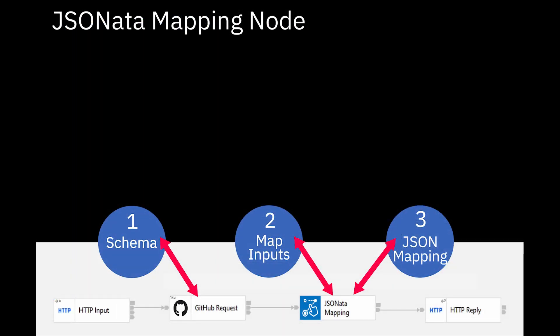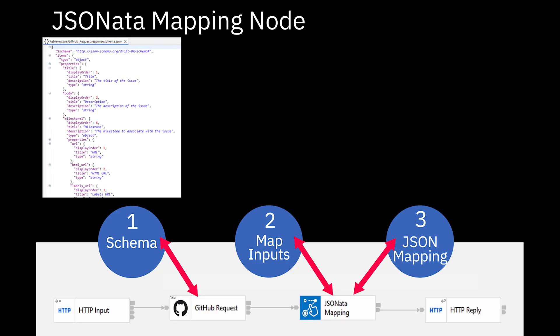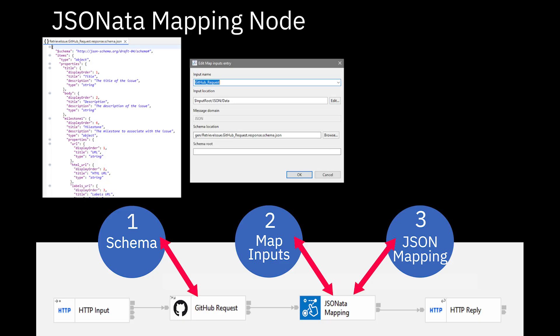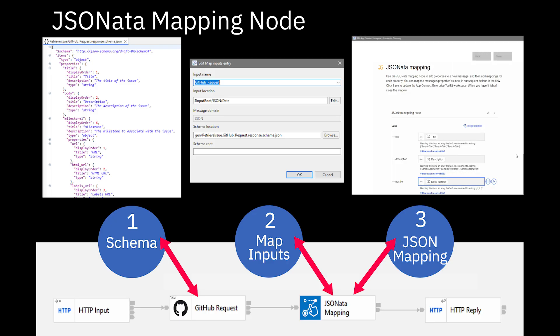So in this video, I've shown how to use the new JSON-ARTA mapping node in the ACE version 13 toolkit. There are three steps for configuring the node: the schema needs to be provided for the input data so that mappings can be done; the schema must be added to the map inputs table on the JSON-ARTA mapping node; and the desired output must be specified by configuring the mappings in the JSON-ARTA mapping wizard.